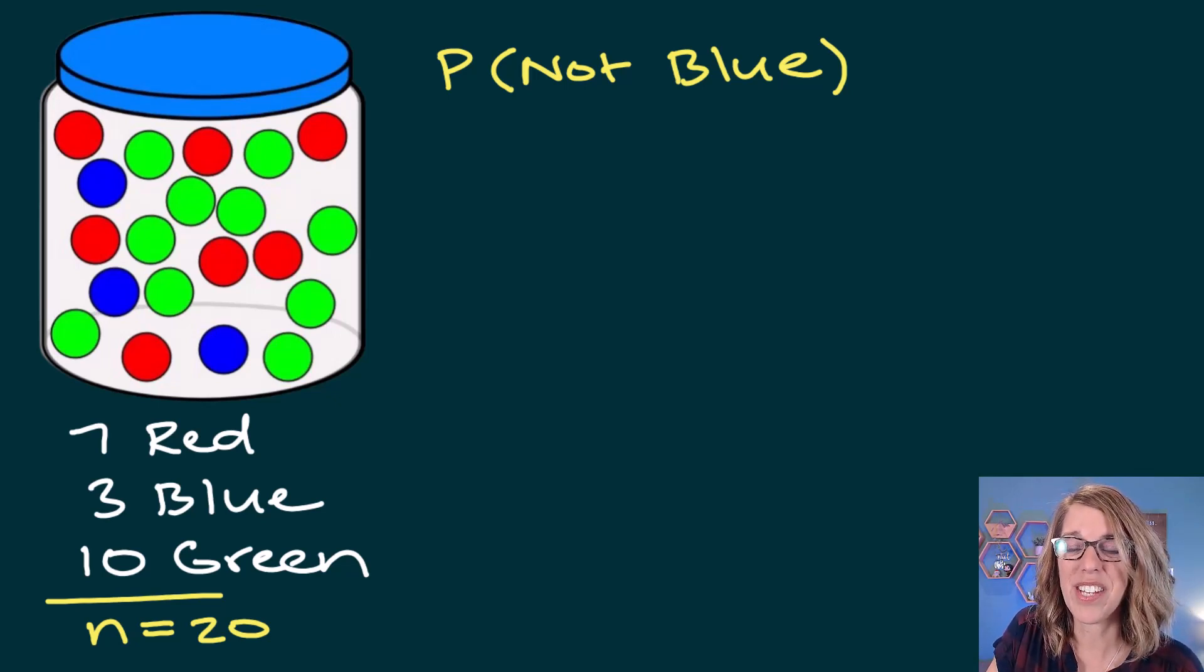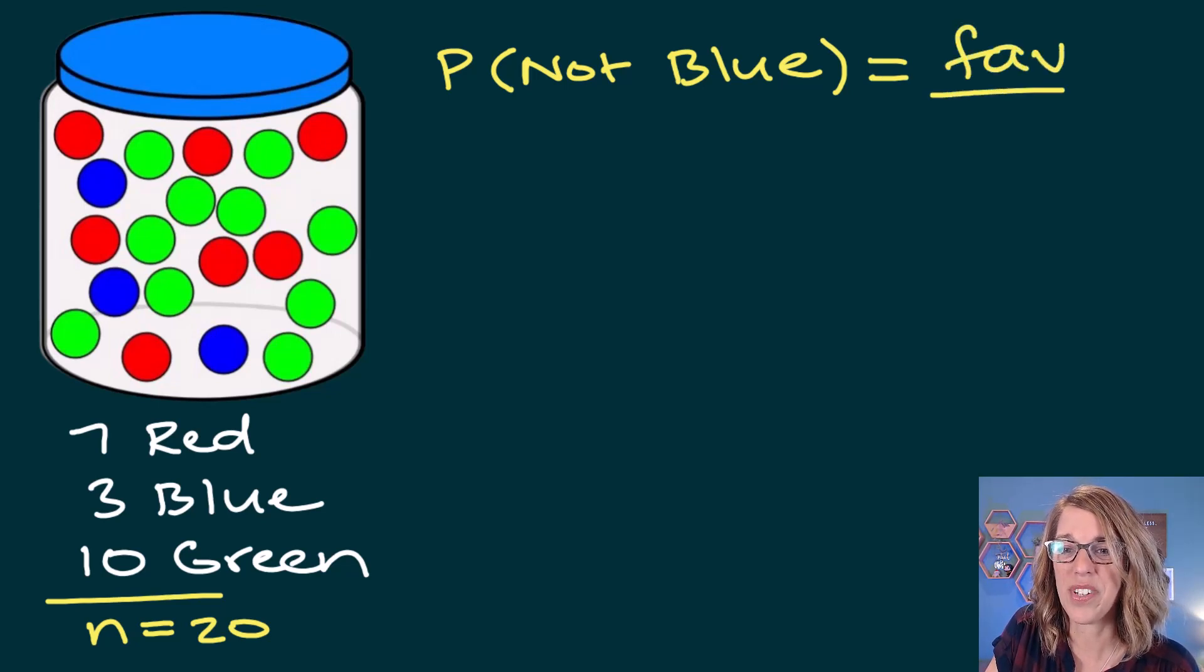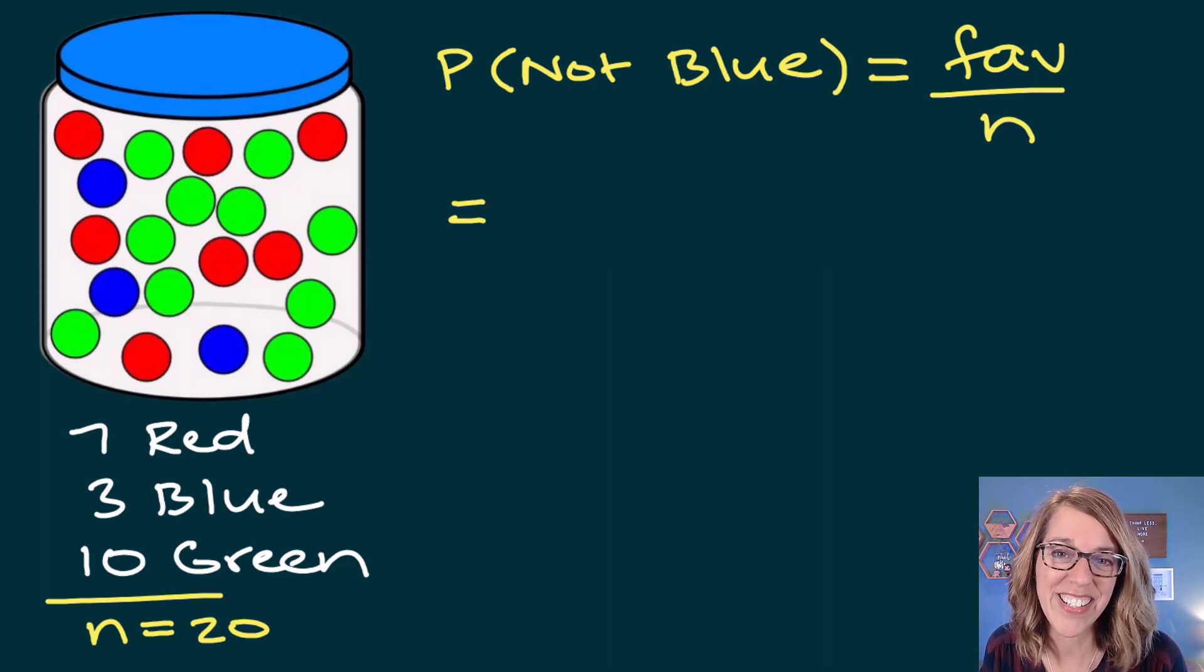I'm going to put this together using favorable out of total. This time, I don't want a blue. There are two different ways to get to this answer. The first one is to cross off those blue marbles. You know that you'll take any other color.